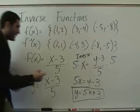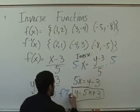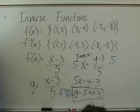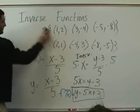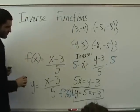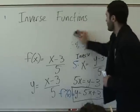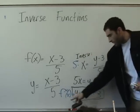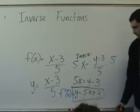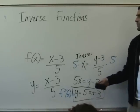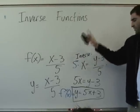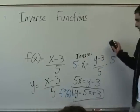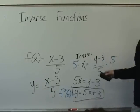So technically we can write f to the negative 1 of x equals 5x plus 3. If I graph that first one and that last one, they'd be inverses of each other. Think of it like y. If we leave it as y, would that be wrong? Not necessarily, no. But when we're talking about functions, the traditional way is to have y in the form of f of x or something. So that's the idea — we just change it to y for the purposes of math.